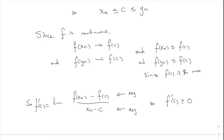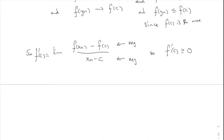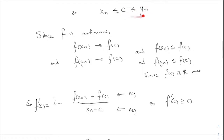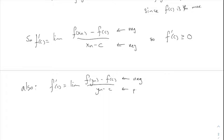Now let's do the same thing with the YN sequence. F prime of C is also the limit of F of YN minus F of C over YN minus C. On top, F of YN minus F of C is negative, because F of YN is less than F of C. On the bottom, YN minus C is positive, because the YNs are bigger than C. So this whole fraction is always negative, which means F prime of C must be less than or equal to zero.